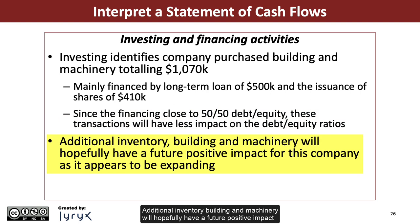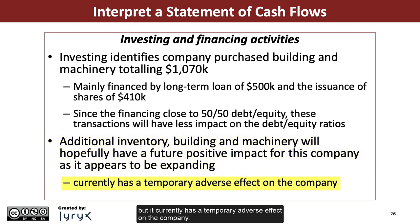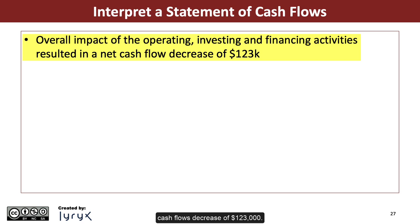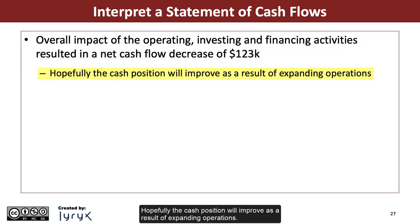Additional inventory, building, and machinery will hopefully have a future positive impact for this company as it appears to be expanding, but it currently has a temporary adverse effect on the company. The overall impact of the operating, investing, and financing activities has resulted in a net cash flows decrease of $123,000. Hopefully the cash position will improve as a result of expanding operations.